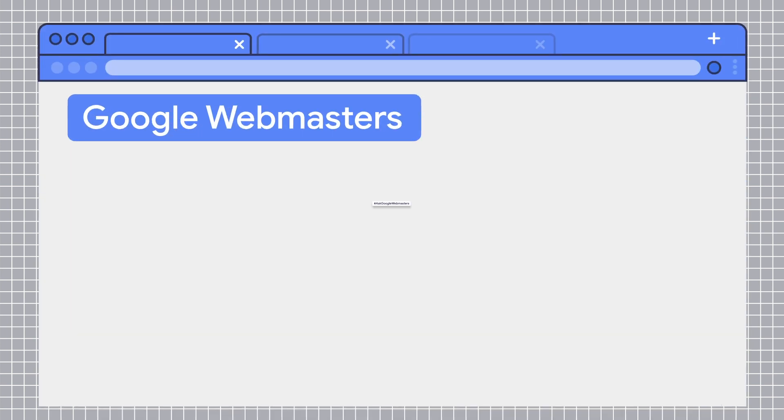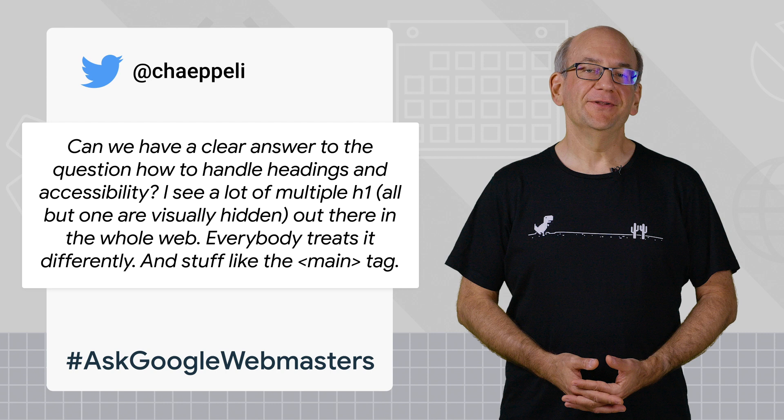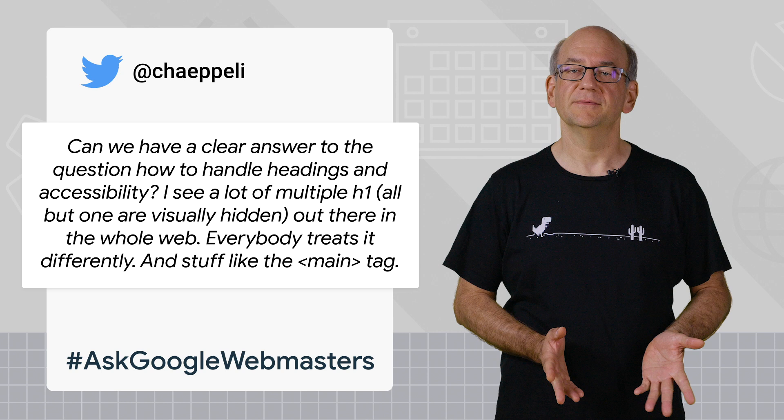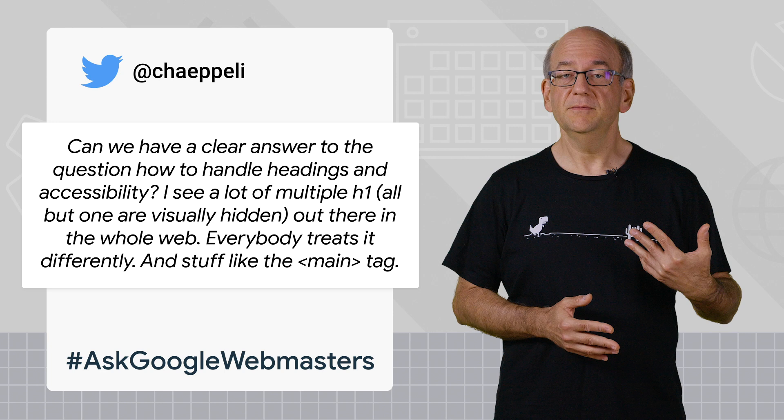Welcome to another episode of Ask Google Webmasters. Today's question is from Marcus Kepeli. Marcus is asking: can we have a clear answer to the question of how to handle headings and accessibility? I see a lot of multiple H1s out there on the web — all but one are usually hidden — and everybody treats it differently, and stuff like the main tag.